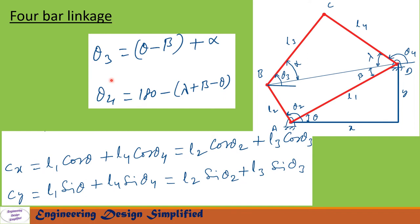In the previous slide we have seen the equations for theta 3 and theta 4. Now let us write the position equation for C. The horizontal position Cx equals L1·cos(theta) plus L4·cos(theta 4), the horizontal component of L4. In the second quadrant cos(theta) will be negative, which will be taken care of in this equation. This equals L2·cos(theta 2) plus L3·cos(theta 3). So Cx: L1·cos(theta) plus L4·cos(theta 4) equals L2·cos(theta 2) plus L3·cos(theta 3).